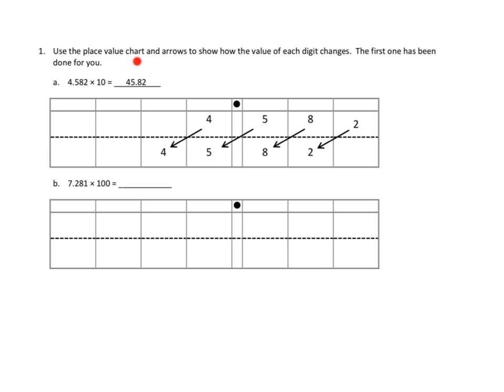Problem number one asks us to use the place value chart and arrows to show how the value of each digit changes. The first one has been done for you. So let's take a look at 1A, the one that they did for us. We start off with this number, 4.582.